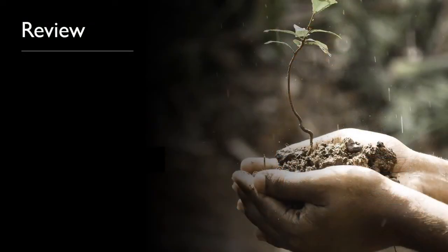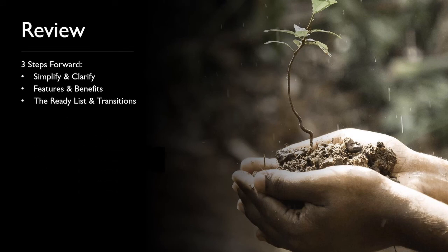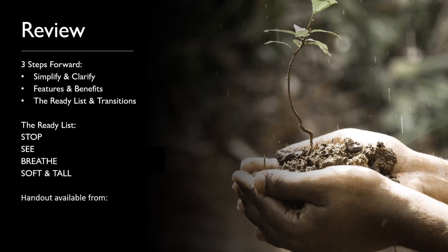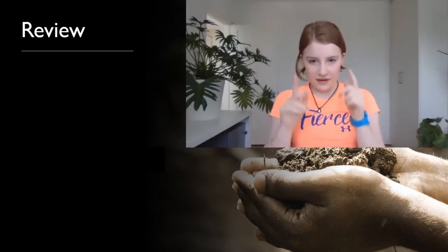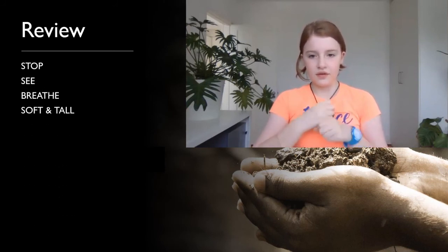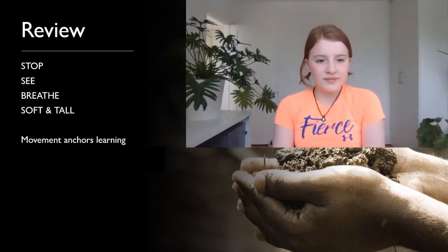And now a quick review of the information in this talk. We started with three simple steps: simplify and clarify, features and benefits, the ready list and transitions. And the ready list being: stop, see, breathe, soft and tall. A handout with more details is available from developingself.net/conference. You will have already noticed that the children use movements when they practice the ready list — we do this because movement anchors learning. Since we introduced movements into the ready list, even the youngest children can remember it. Thanks to Alessandro Fattorini, who inspired me to put movements into the ready list.